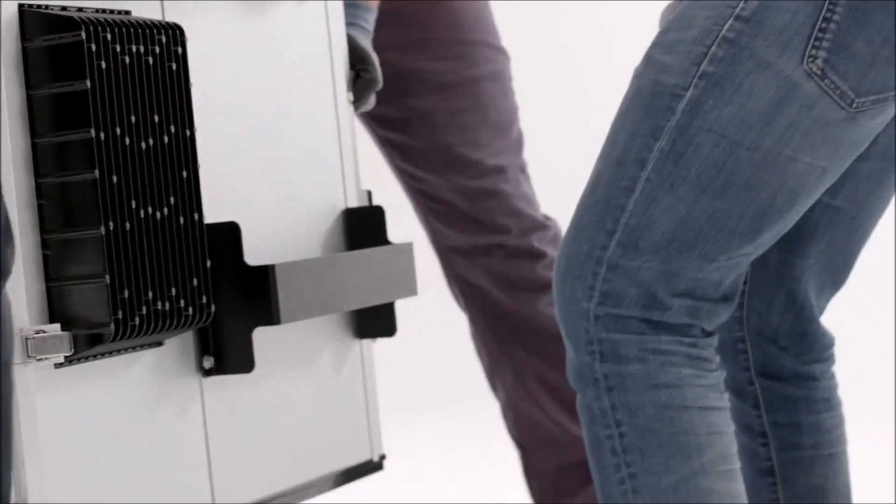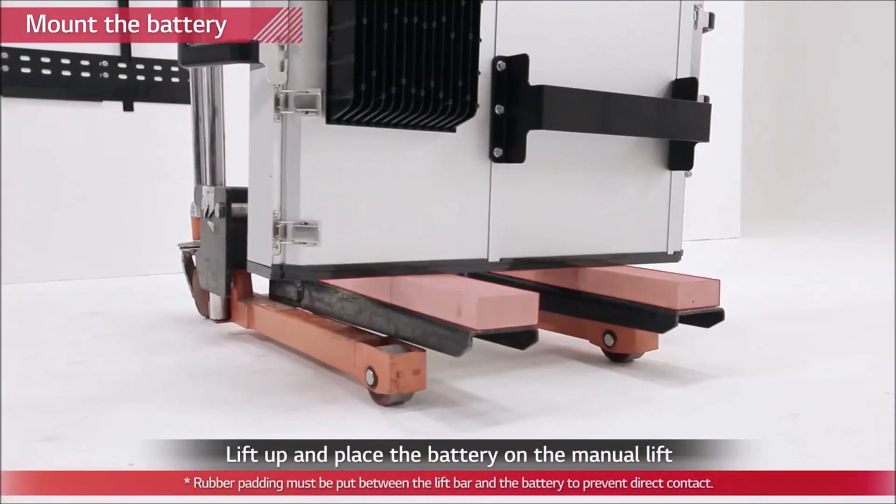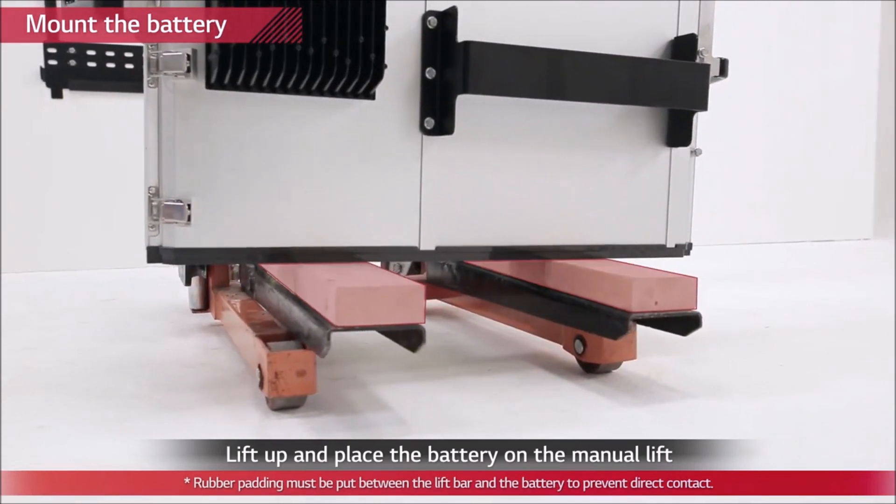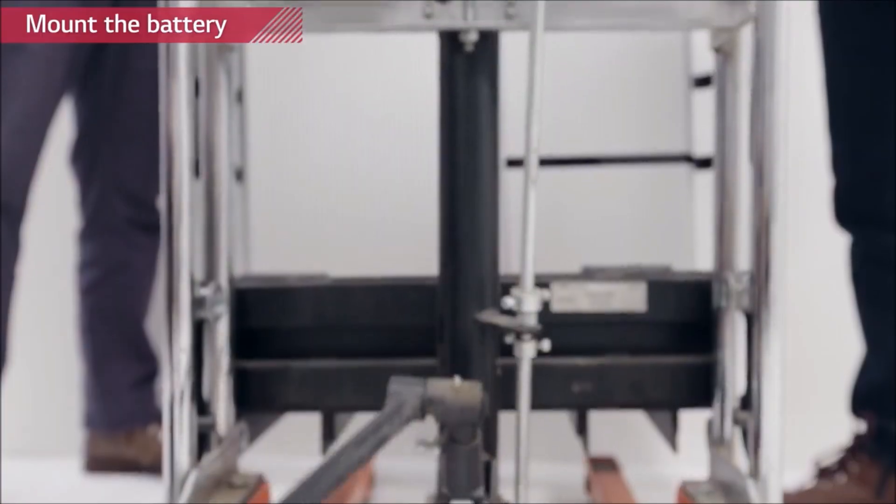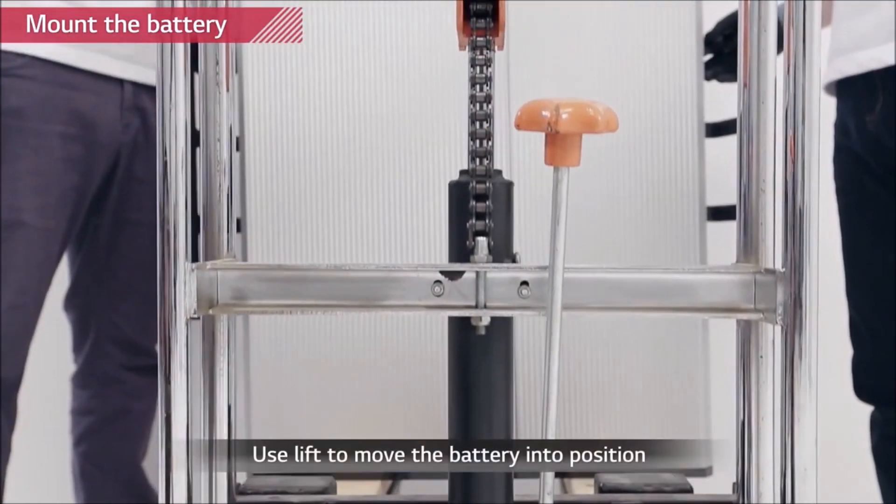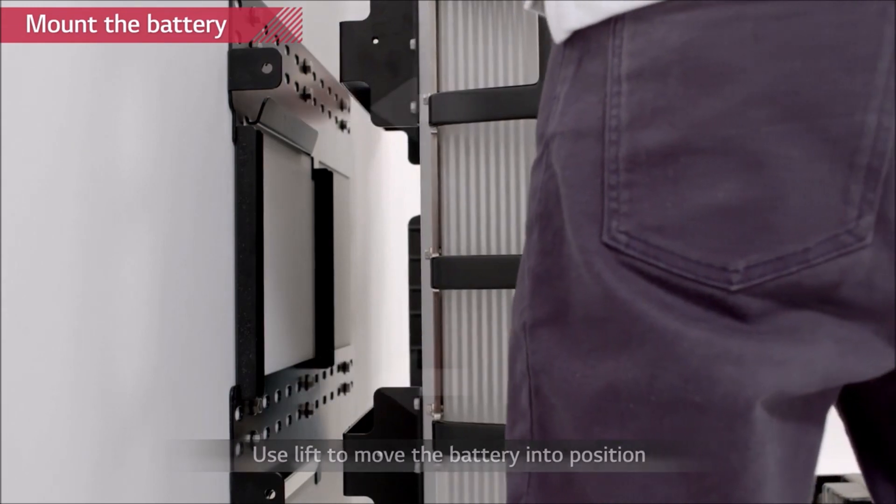Now, it's time to fix the battery to the wall mounting bracket. Since the battery is extremely heavy, LG Chem recommends to use manual lift for the installation. Lift the battery pack and place the pack over the U-shaped clip of the bracket.